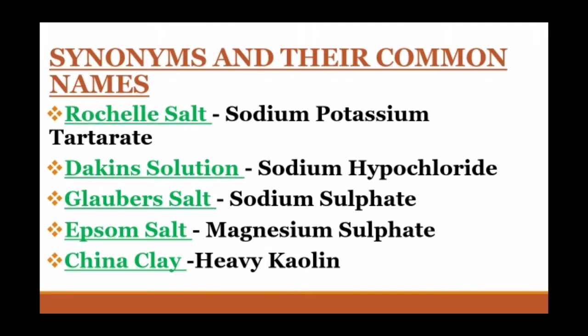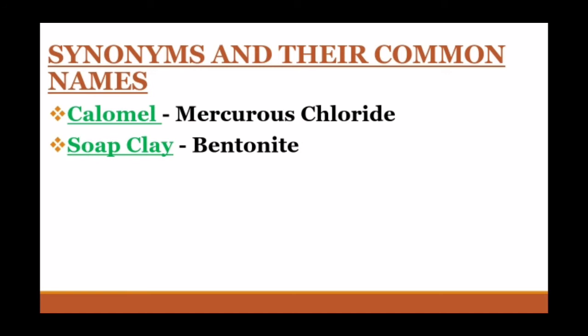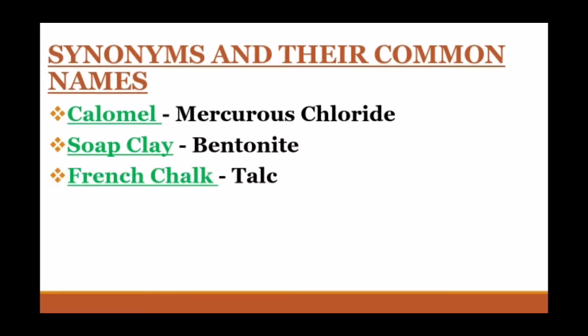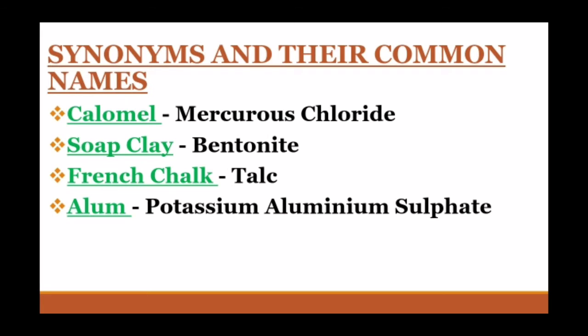China clay is also called heavy kaolin. Next is Calomel, which is commonly called mercurous chloride. Soap clay is also known as bentonite. French chalk is also called talc. Alum is known as potassium aluminium sulphate.